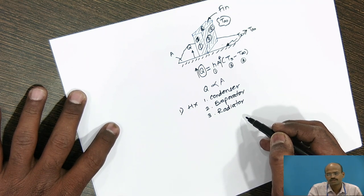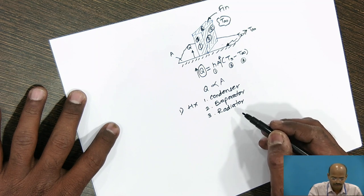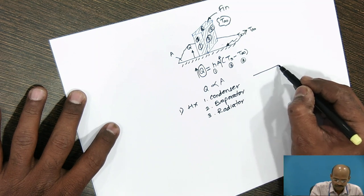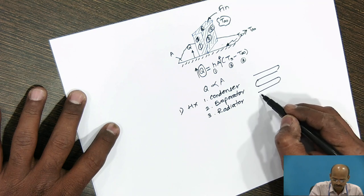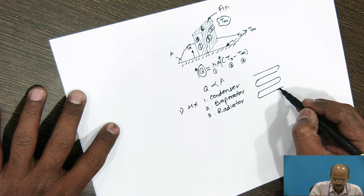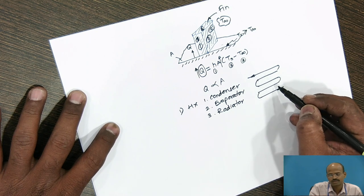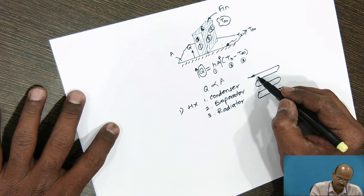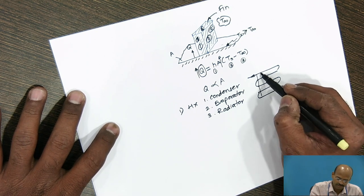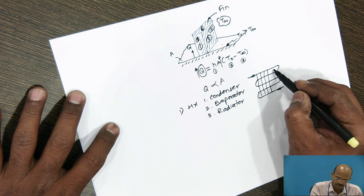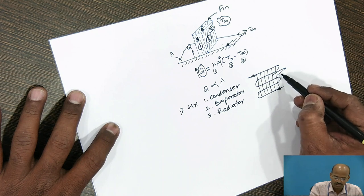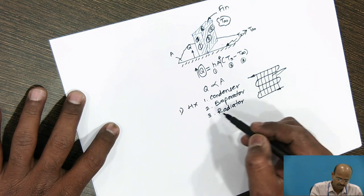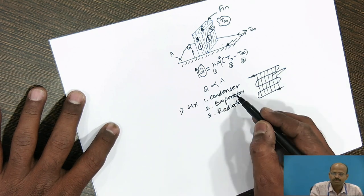For the domestic refrigerator also, on the back side, the condenser tubes are there. These are the copper condenser tubes. Suppose, this is the inlet, this is the outlet. How to increase the surface area? So, small diameter wires are attached to these tubes. These are also called fins. So, these are few applications.